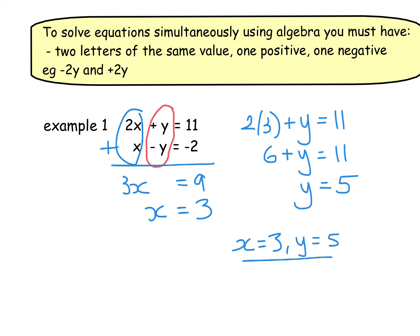I'm a big stickler for writing a little conclusion at the side. Simultaneous equations is a question in the exam that you should be able to check — you can go and verify if you've got it right. We substituted into the first equation, so now I'll do a quick check with the bottom equation. I replace x with 3 and y with 5: 3 take away 5 is negative 2, which matches. So I know I've got it right. If it didn't work, go back to the beginning and check all your steps.